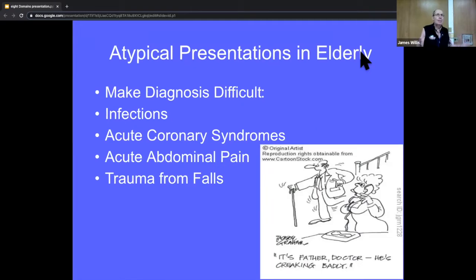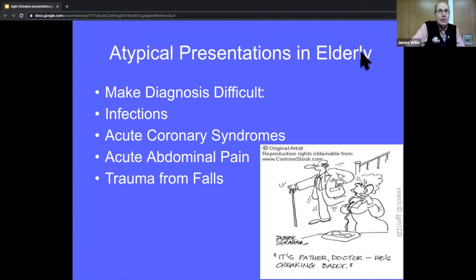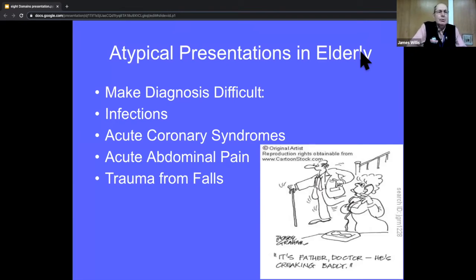The elderly can present very atypically, making diagnosis very difficult. For infections, they may present with very little fever — even a temp of 100 orally or 100.6 rectally is a significant fever in an elderly patient, and hypothermia is even more dangerous. They may not have classical signs of infection: they may come in septic with only altered mental status, without complaining of cough yet having pneumonia, without dysuria yet having urosepsis, or have a badly infected decubitus ulcer they can't tell you about.